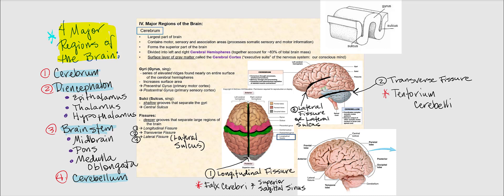As we discussed before, we have four major regions of the brain. We have the cerebrum, we have the diencephalon, which encompasses the epithalamus, the thalamus, and the hypothalamus. We have the brain stem, which consists of the midbrain, the pons, the medulla oblongata, and the cerebellum.